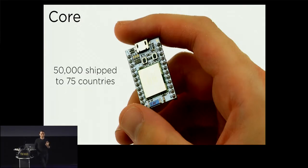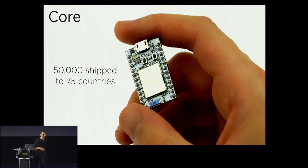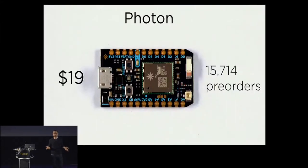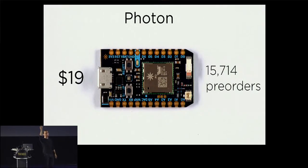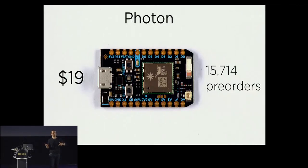The Photon has over-the-air software updates, so you can program it without plugging it in, and a really easy software environment. Instead of needing to write a whole bunch of stuff to manage a TCP stack, you say spark.publish and it just works. Or spark.function, and now you can access that function over the API or from your app or wherever else.